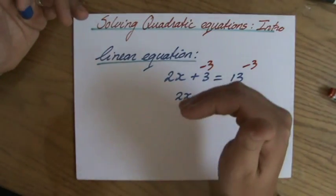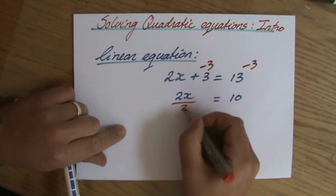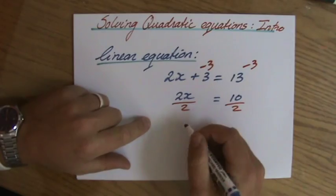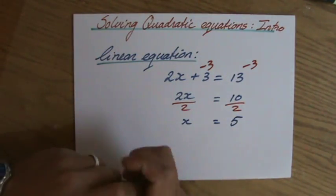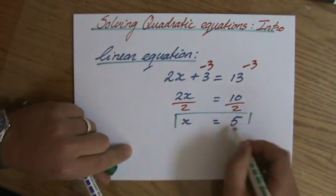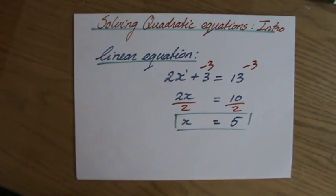And then finally I say, well, 2x equals 10. Then I will divide both sides by 2 in order to find x. So that is the strategy to solve a linear equation where the highest power of x is a 1. Because it's 2x to the power of 1, if you like, plus 3 equals 13.